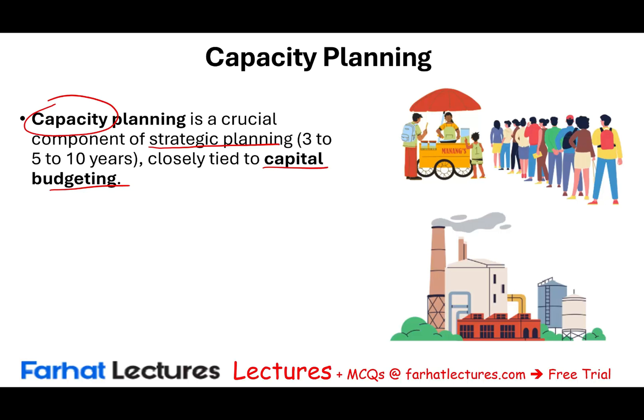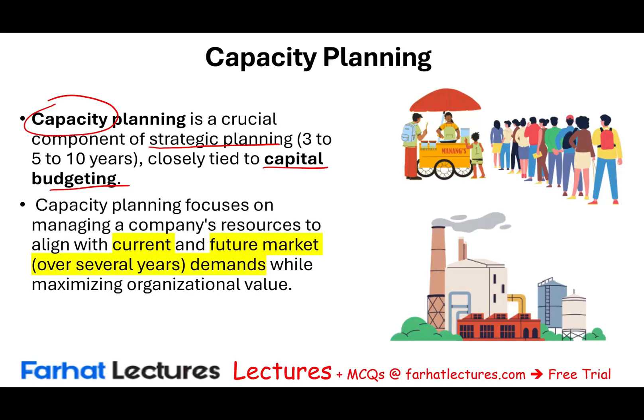Capital budgeting involves those large expenditures — buying a warehouse or big machinery. Capacity planning is part of strategic planning: you have to look at how much capacity you have and how much you need. Whatever you are short of, you input that information into your capital budgeting. Capacity planning focuses on managing company resources to align with current and future market demand over several years while maximizing organizational value.